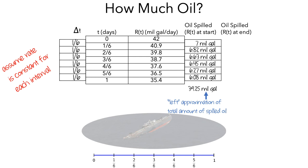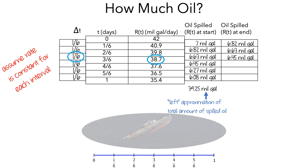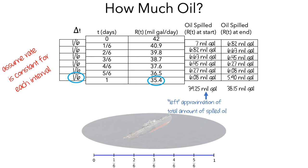We also could have used the rate at the end of each interval. For example, in the first time interval, multiplying 1/6 of a day by 40.9 million gallons per day gives 6.82 million gallons. For the second interval, using the end rate gives 6.63 million gallons. Continuing: the next interval gives 6.45 million gallons, then 6.27 million, then 6.08 million, and the final interval gives 5.9 million gallons, adding up to 38.15 million gallons of oil.